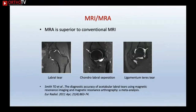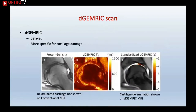The further investigation of choice is MR arthrogram, which is superior to standard MRI. It can easily diagnose labral tears and chondrolabral separation, but unfortunately it is not very good at detecting chondrolabral delamination. For delamination, the more specific test is the delayed gadolinium-enhanced MRI scan — the dGEMRIC scan — which is not widely available in UK centres but clearly demonstrates delamination compared to conventional MRI.